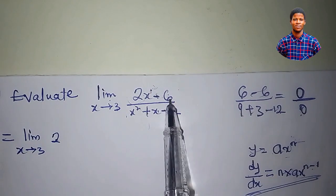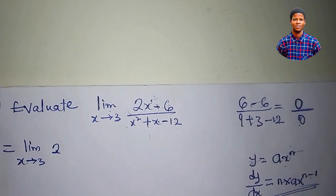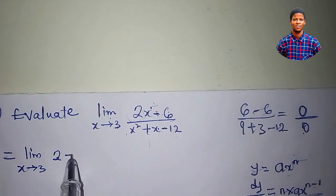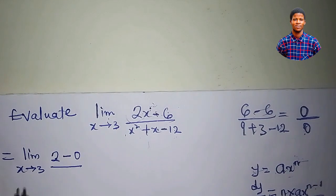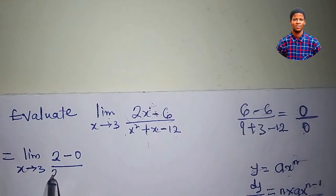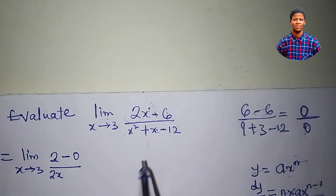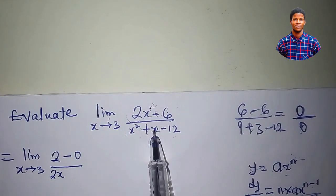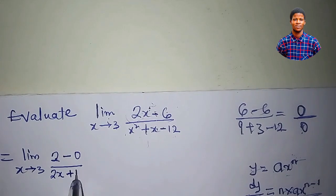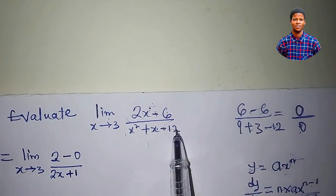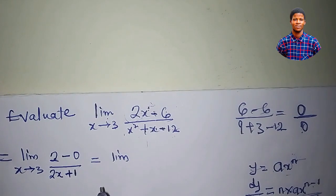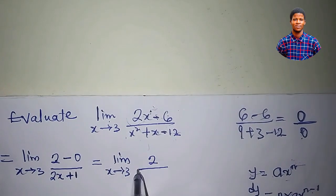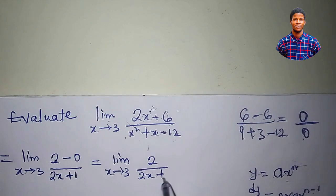Divided by — differentiate x squared to get 2x, differentiate x to get 1, and differentiate minus 12 to get 0. So what we have now is the limit as x approaches 3 of 2 all over 2x plus 1.